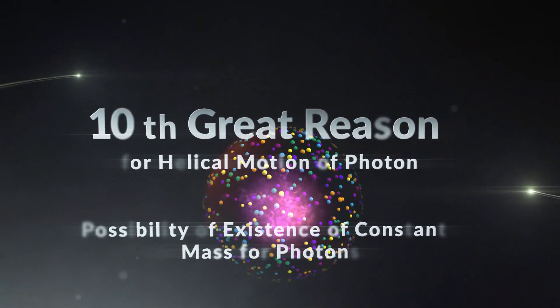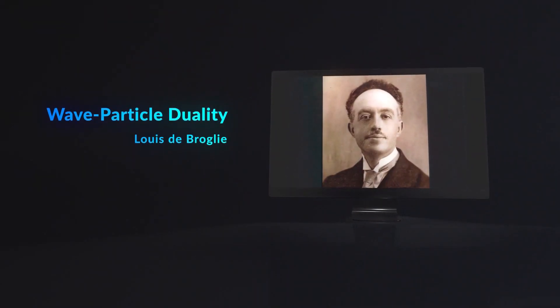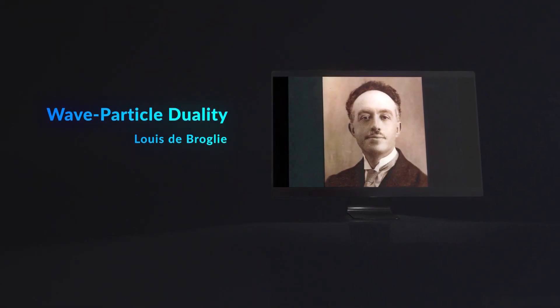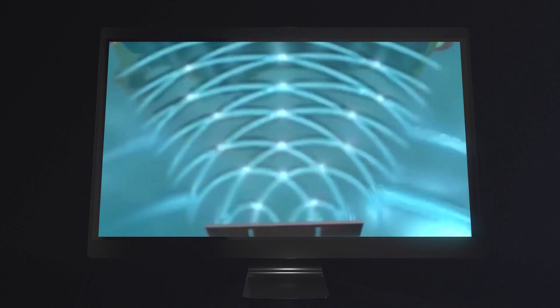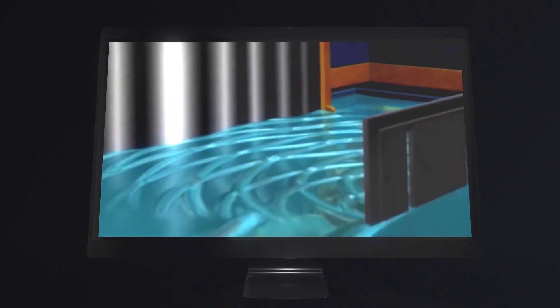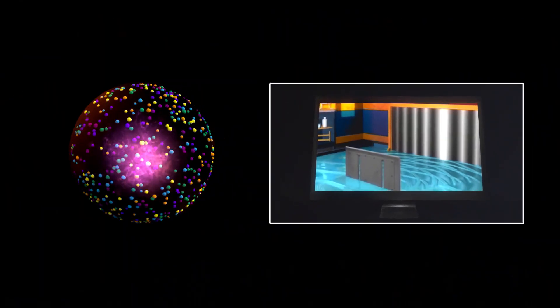10. Possibility of existence of constant mass for photons. According to Louis de Broglie theory, all matters have dual nature, and this is not merely limited to the light. For example, electrons that have constant mass have wave-like nature at the same time. Therefore, it is not impossible for a photon to have a fixed mass, and this is the point that is considered in Solich theory.